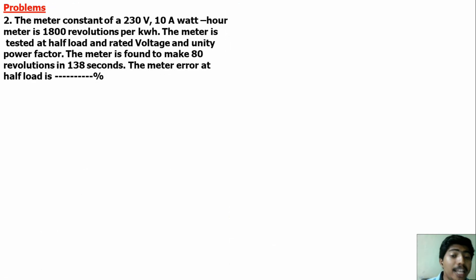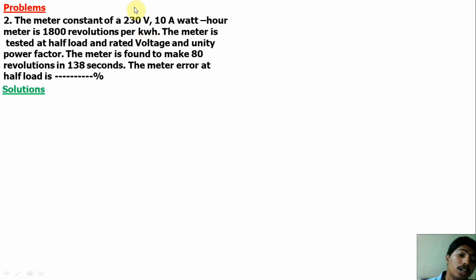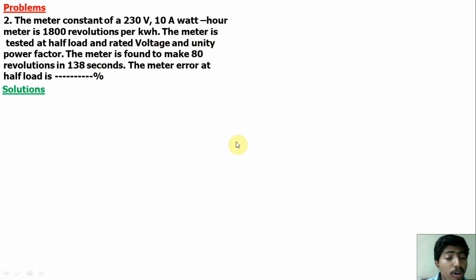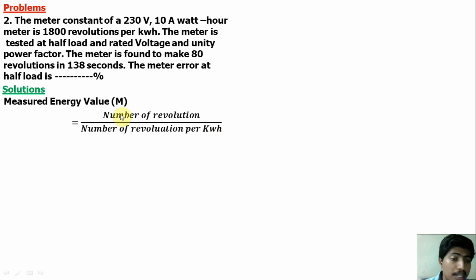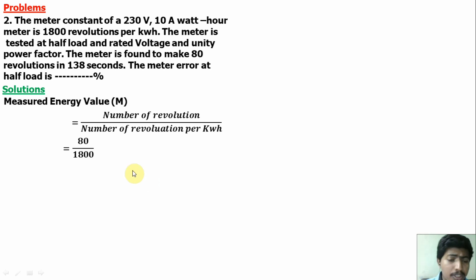Second question — here we have to find the error value. Meter constant is given as 1800 revolutions per kilowatt hour. Input voltage is 230 volts, rated current is 10 amps, power factor is unity. The meter is tested at half load and rated voltage — half load means current is half. Number of revolutions is 80 and time is 138 seconds. First, measured value equals 80 divided by 1800, giving 0.0444 kilowatt hour, that is 44.44 watt hour.